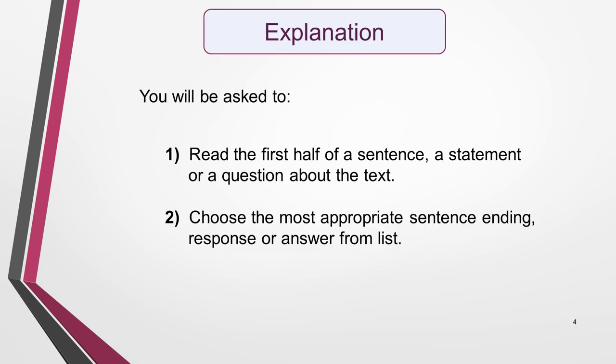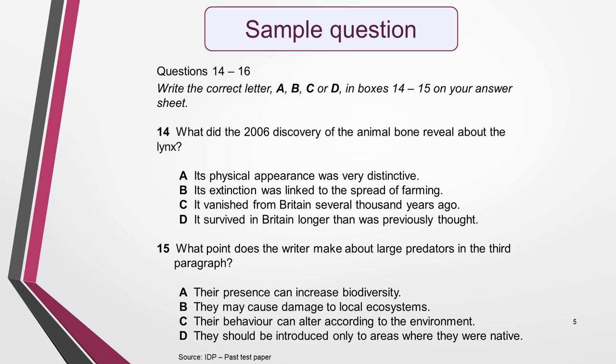You'll be asked to read the first half of a sentence, a statement, or a question about the text, then choose the most appropriate sentence ending, response, or answer from a choice of options — usually four. Only one is correct, although several could appear to be the right one on first reading, so be careful. Here's an example of how the instructions and questions will be set out. It's part of a question taken from a past test paper. Pause the video if you want to spend a few moments studying it.